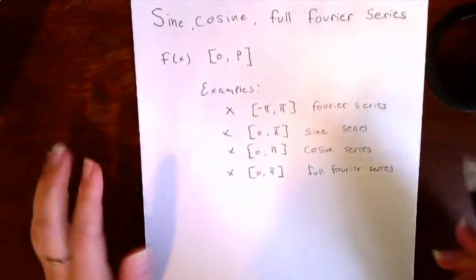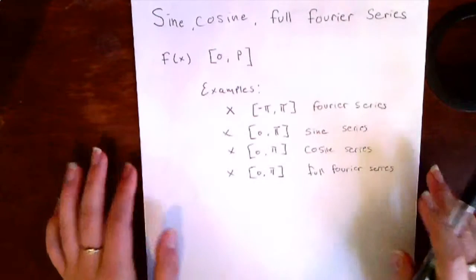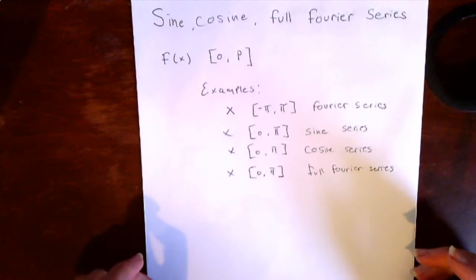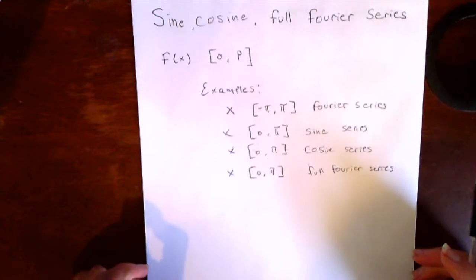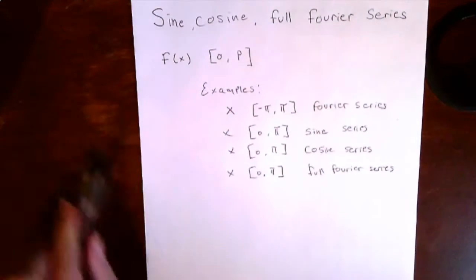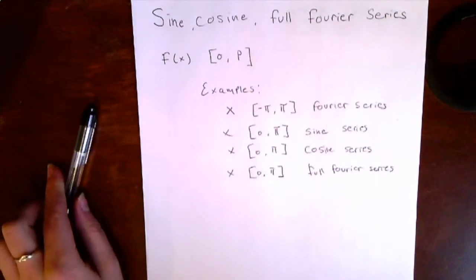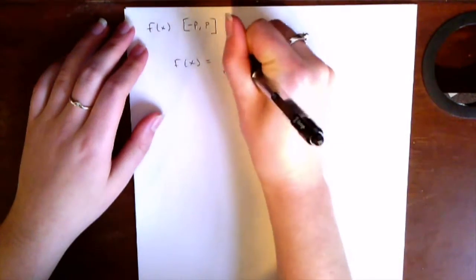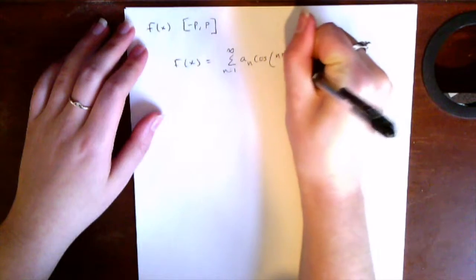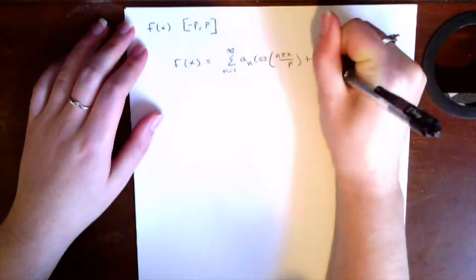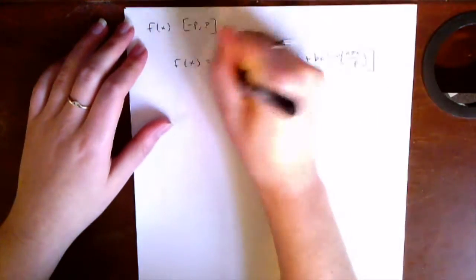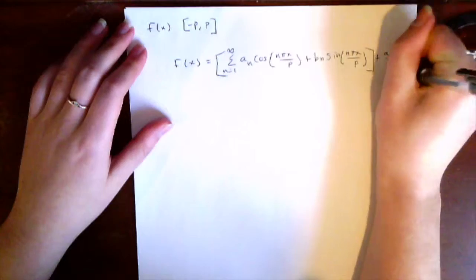I'll be talking about these methods and also be doing examples. If you'd like to skip to the examples, I have links in the description. The Fourier series representation of a function is that function represented as an infinite sum of periodic functions — those functions being sine and cosine.